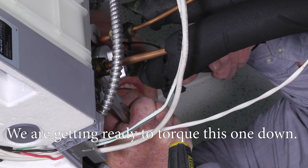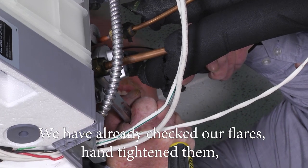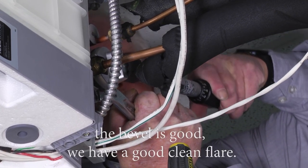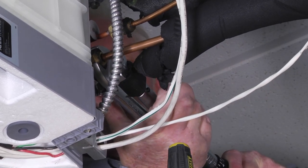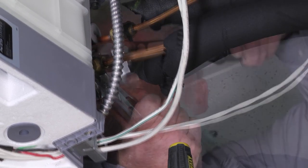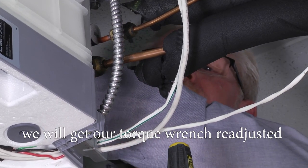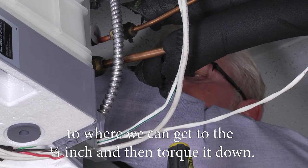We're getting ready to torque this one down. We've already checked our flares, hand tightened them. The bevel is good, we got a good clean flare. Now we tighten this one up. We'll get our torque wrench readjusted to where we can get to the quarter inch and then torque it down.